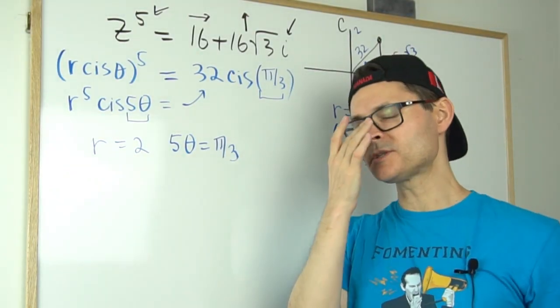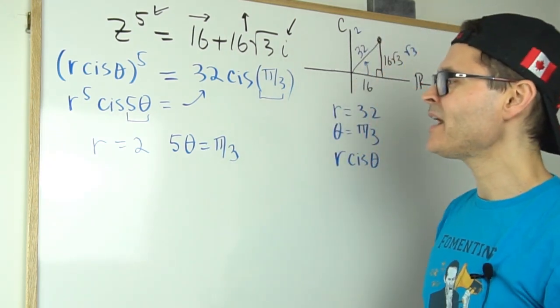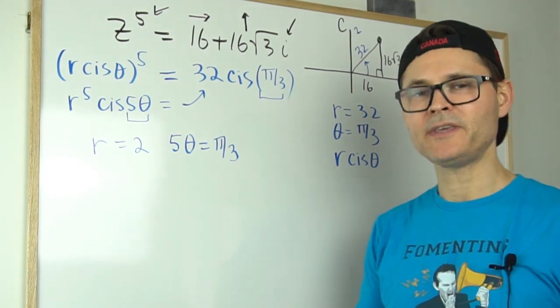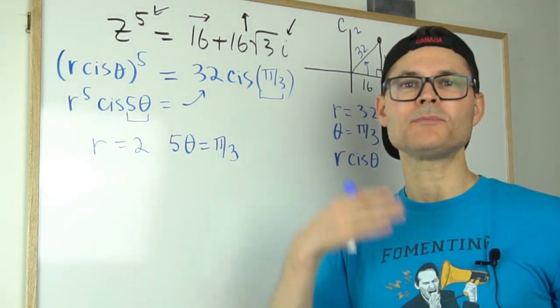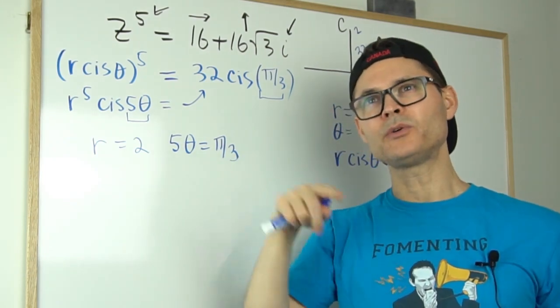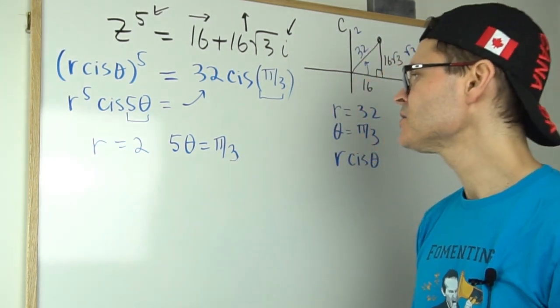So now we have 5θ equals π over 3. But I know I have five answers. So all I'm going to do here is I'm going to generate the other four by adding multiples of the period. So we go around and around. And we know that one full rotation is 2π radians. So that's all we do.